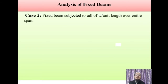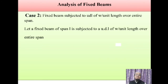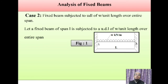Now let us start today's part. In this session, we are going to analyze a standard case — Case 2 — in which a fixed beam is subjected to UDL of magnitude W kN per unit length over the entire span. Let us consider a fixed beam of span L subjected to UDL of W per unit length over the entire span. In the figure, fixed beam AB is fixed at A and B, has span L, and is subjected to W kN/m UDL.